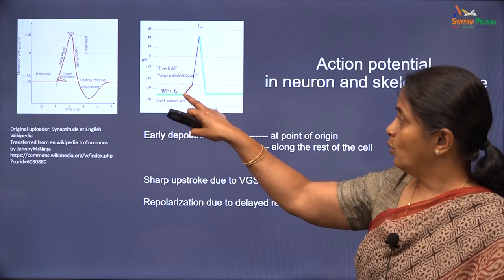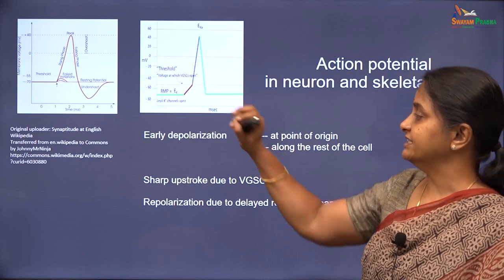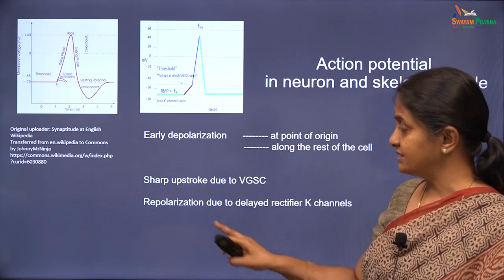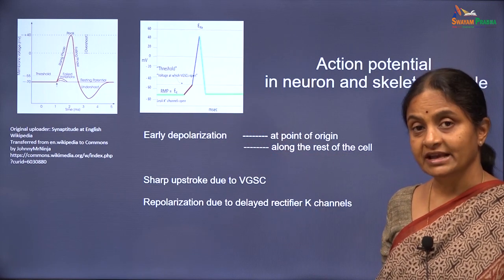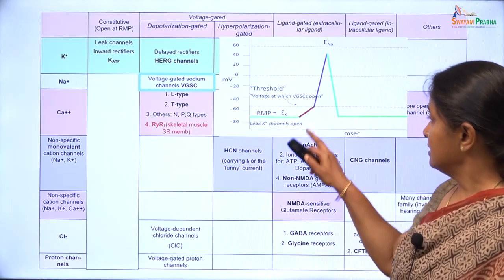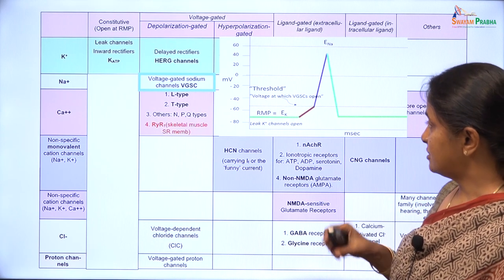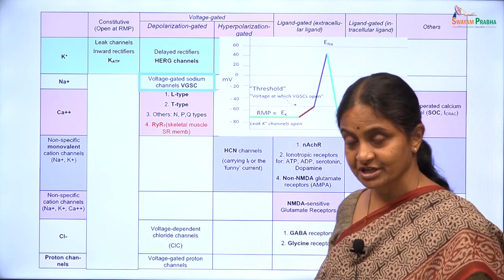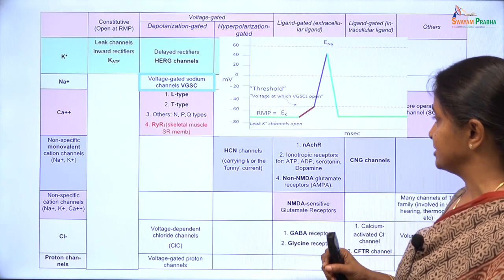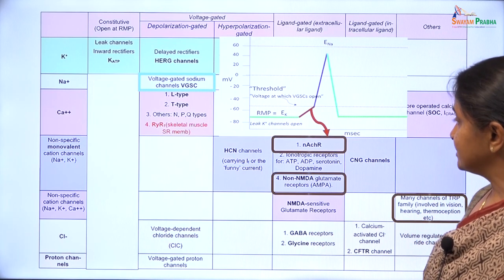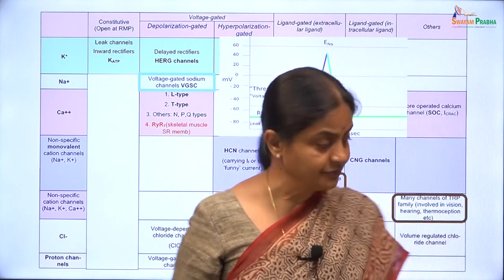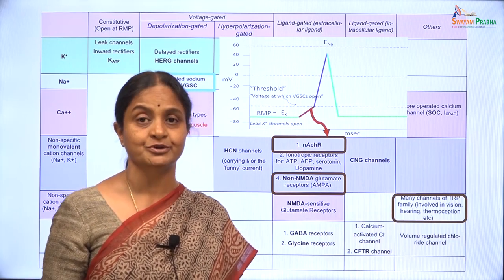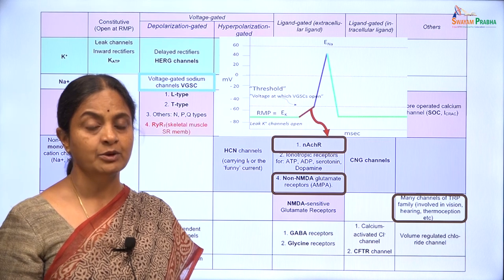Now back to our question: we are going to look at what is the cause of this early depolarization, and then we will consider some properties of voltage gated sodium channels and then repolarization due to delayed rectifiers. This early depolarization — that segment which takes the membrane from the resting potential to the threshold for opening voltage gated sodium channels — may be called the foot of the action potential, and that early depolarization is due to these classes of channels. In different settings, each of these classes of channels contributes to the early depolarization.